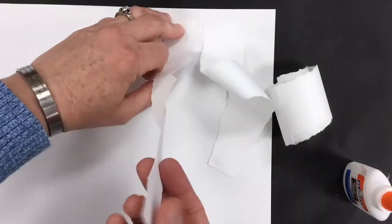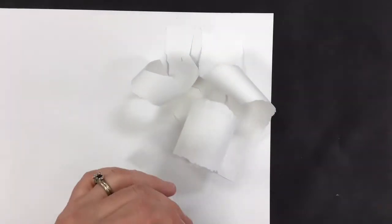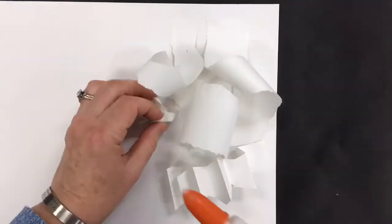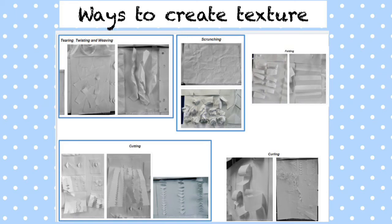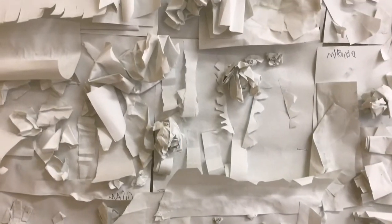Now I'm gluing all of those texture pieces down to my big paper—I'm just putting glue and adding them on. These are all the ways to create texture for your texture board.